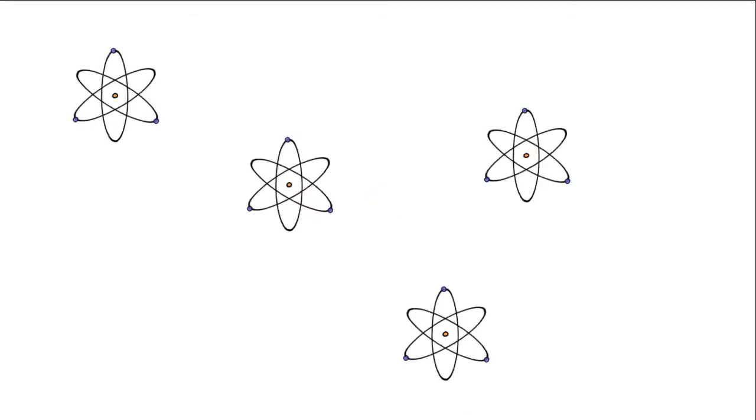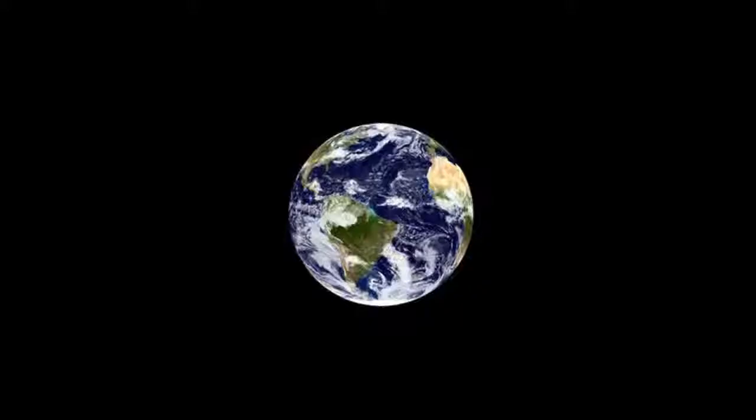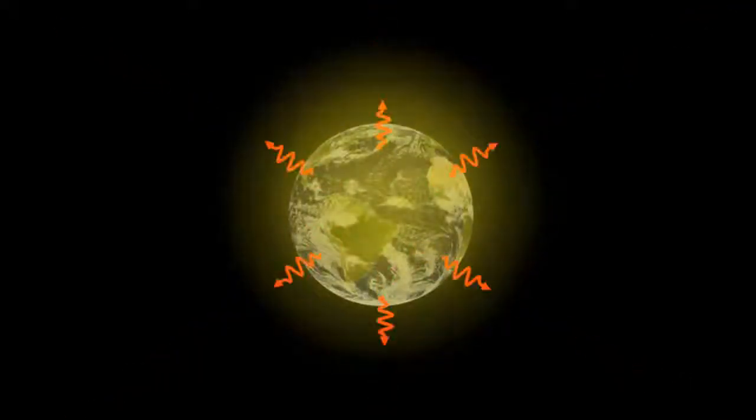In short, all atoms are predicted to be unstable, because all atoms should be radiating electromagnetic energy, losing energy and collapsing. And since all of us are made of atoms, all of us should have collapsed by now.